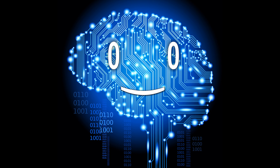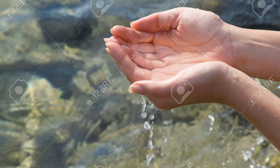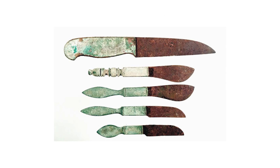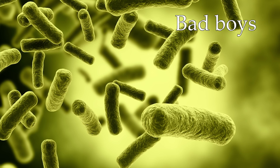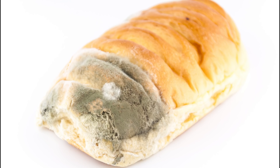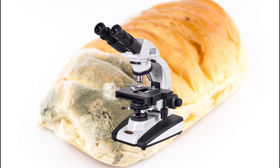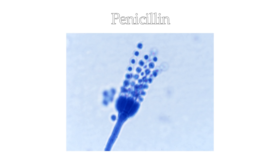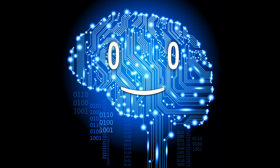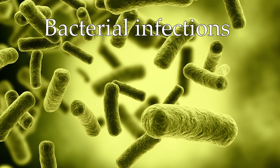Now regarding medicine: wash yourself in clean water regularly to keep yourself clean. Tell the doctors to wash the surgery instruments in boiling water to kill all the small bad boys. Germs haven't been discovered yet, so you can call them whatever you want. The mold that grows on bread, and when viewed under a microscope looks like weird hands, is penicillin, which is an antibiotic. Use it to treat bacterial infections.